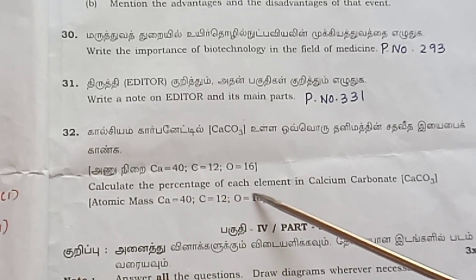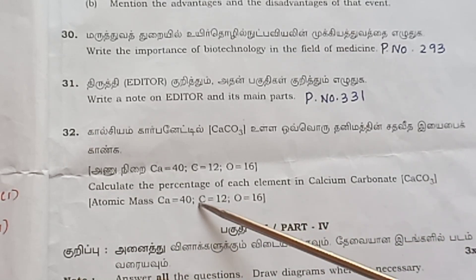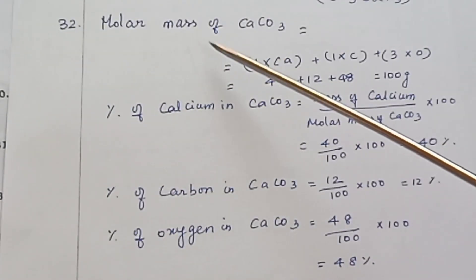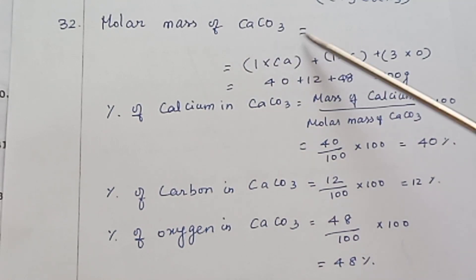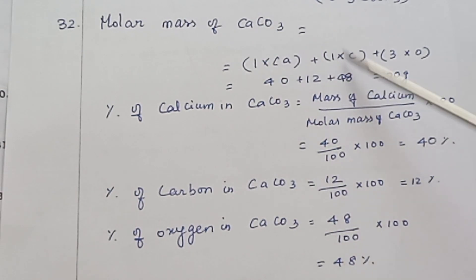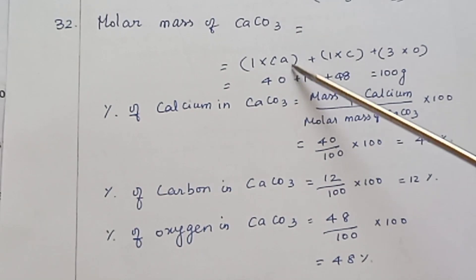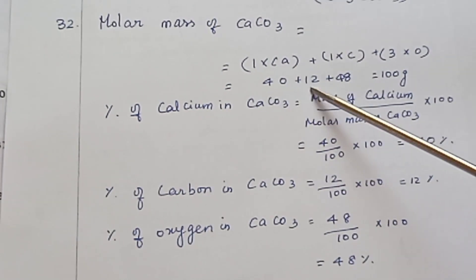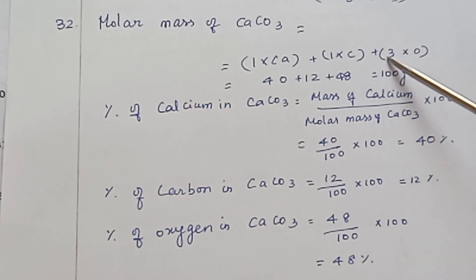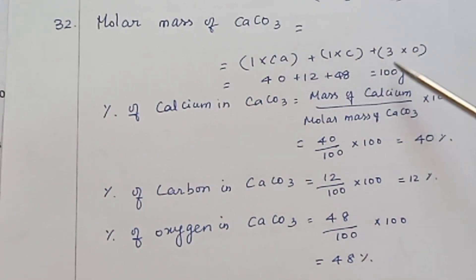Question 32 (compulsory): Calculate the percentage of each element in calcium carbonate CaCO3. Atomic mass: calcium = 40, carbon = 12, oxygen = 16. First, calculate the molar mass of CaCO3: Ca = 40, C = 12×1 = 12, O = 16×3 = 48. Total molar mass = 100 grams.